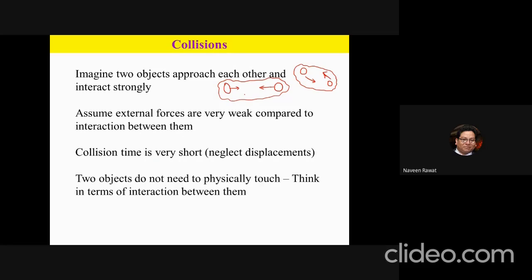You can imagine a rock in outer space approaching a planet. It doesn't necessarily have to hit the planet, but because of gravitational force it can do an interaction — there can be some forces at play and it will change its direction. So let's say there is a rock and a big planet which has some gravitational field. The rock is approaching and because of this gravitational field it gets attracted, changes its course of direction. This kind of situation is also a collision that we can consider.